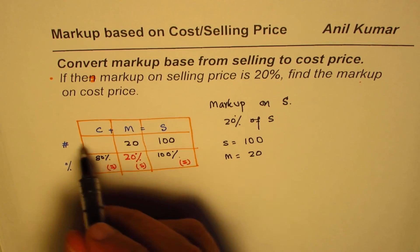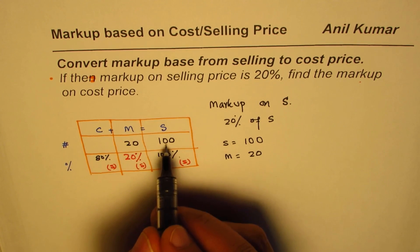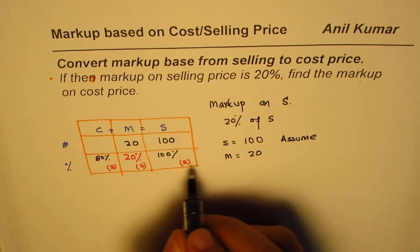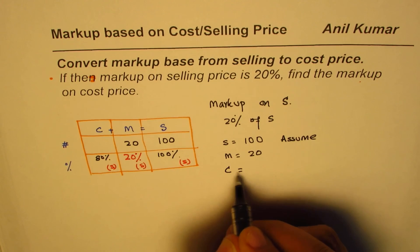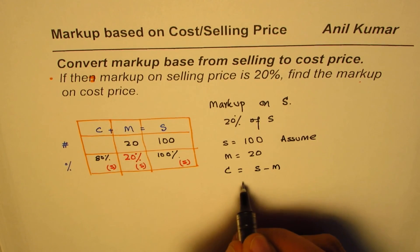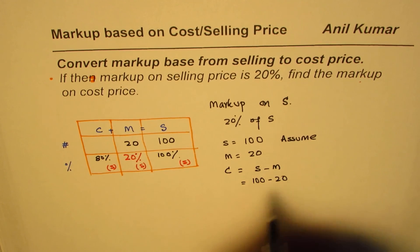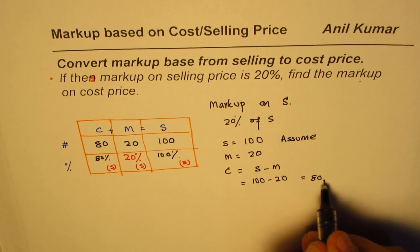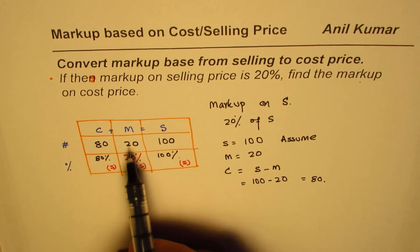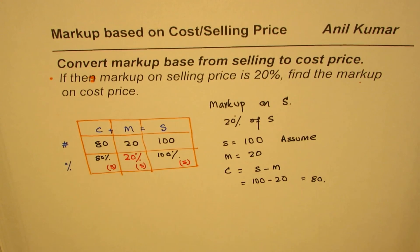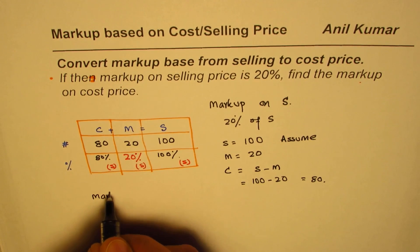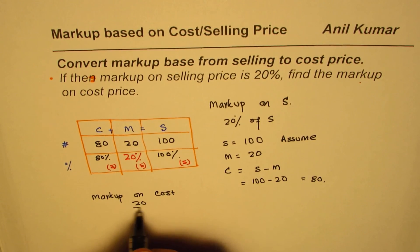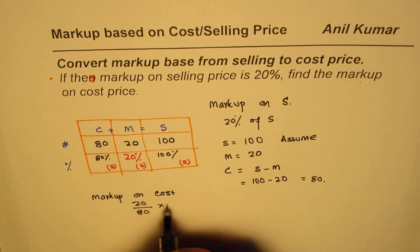Let's assume those values. Markup is $20, and cost equals sales minus markup — that is 100 minus 20 — which gives a cost value of $80. Now we need to calculate markup on cost. Markup on cost will be markup divided by cost, times 100.